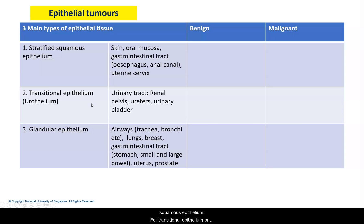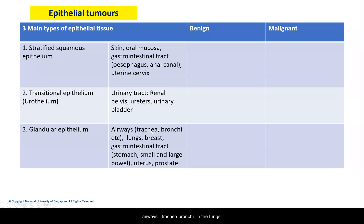For transitional epithelium or urothelium, we know that this is limited more or less to the urinary tract. Glandular epithelium can be found in many organs, including lining the airways, trachea, bronchi, in the lungs, breast, parts of the gastrointestinal tract, uterus, and prostate. These are not exhaustive lists.